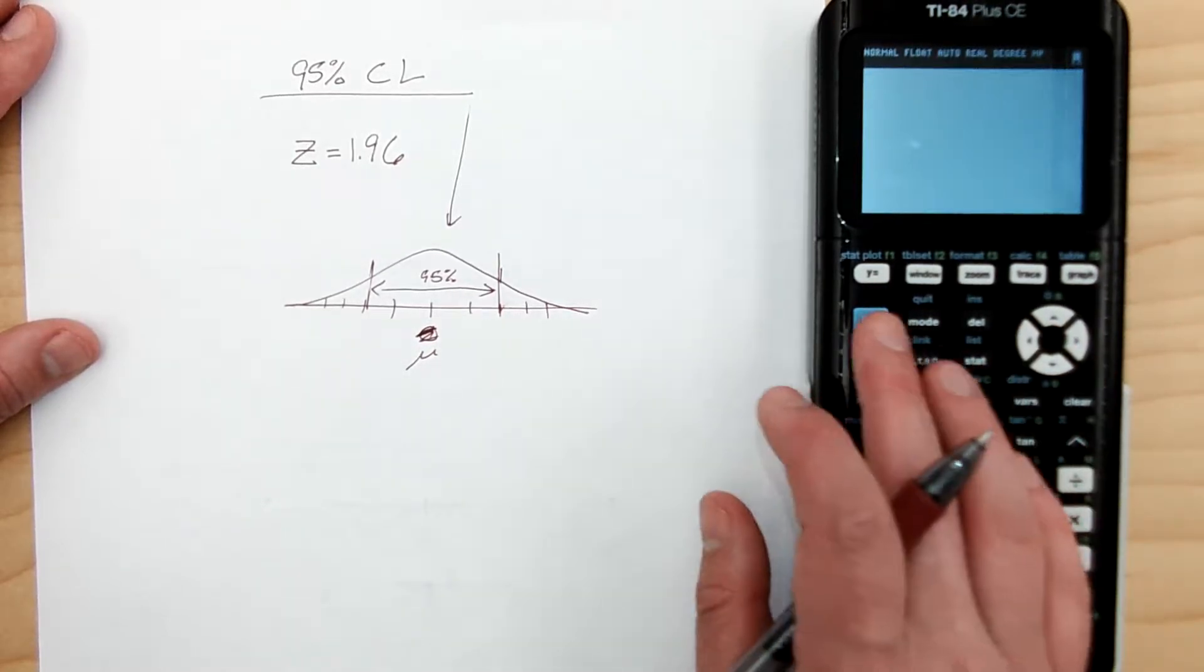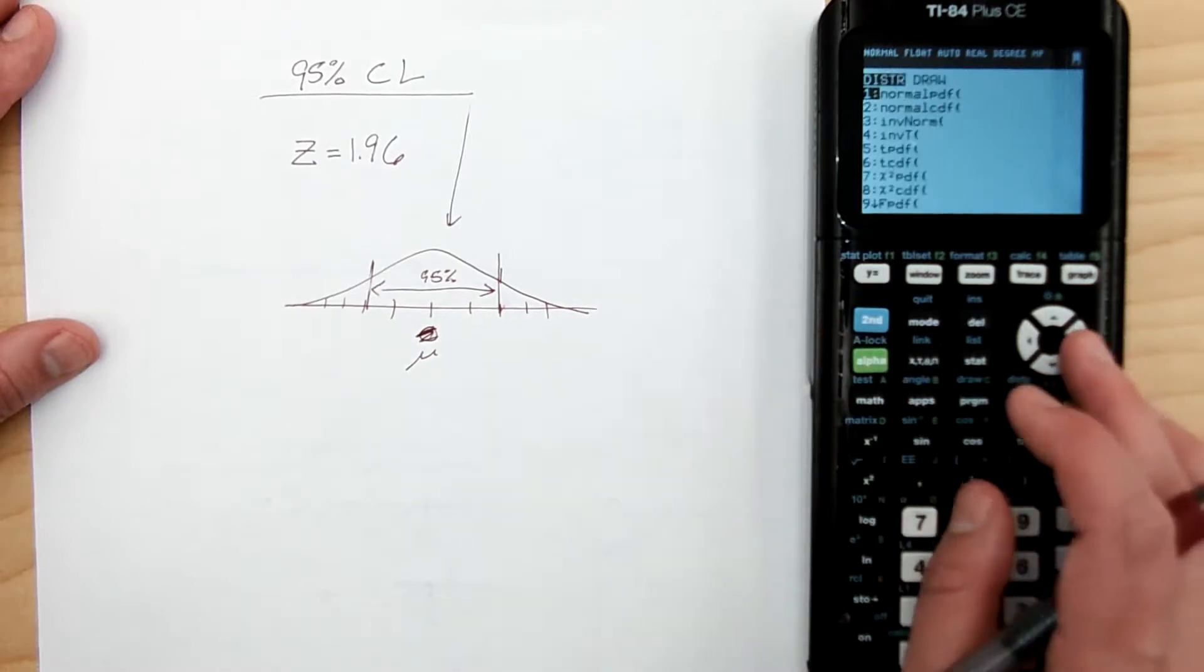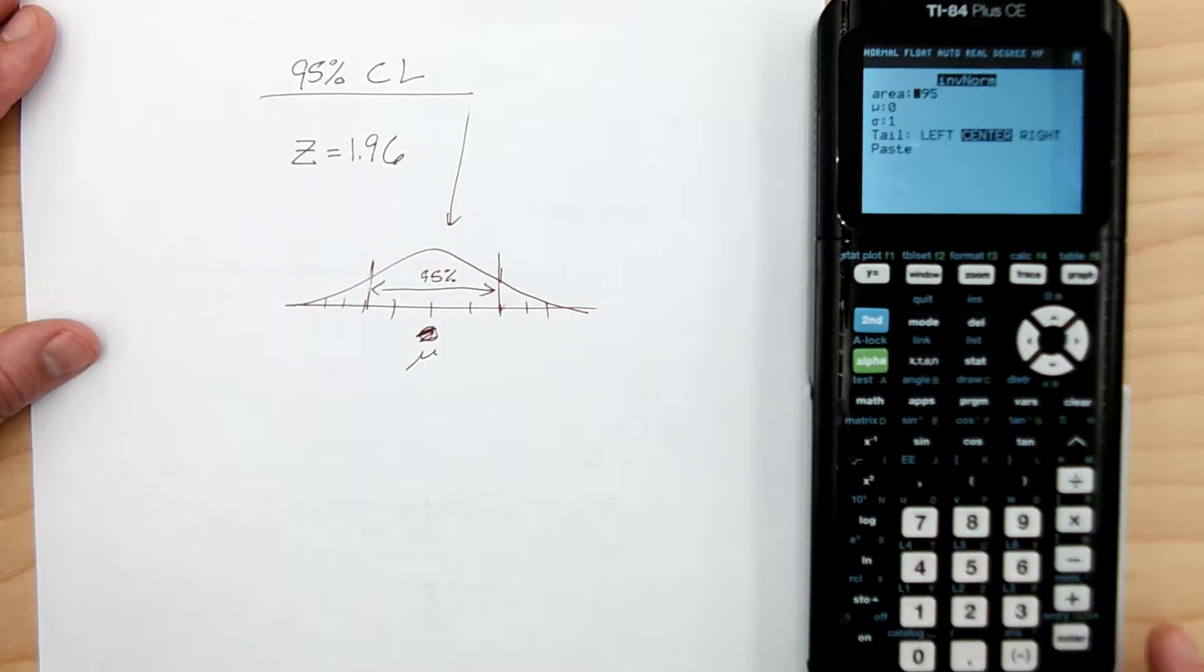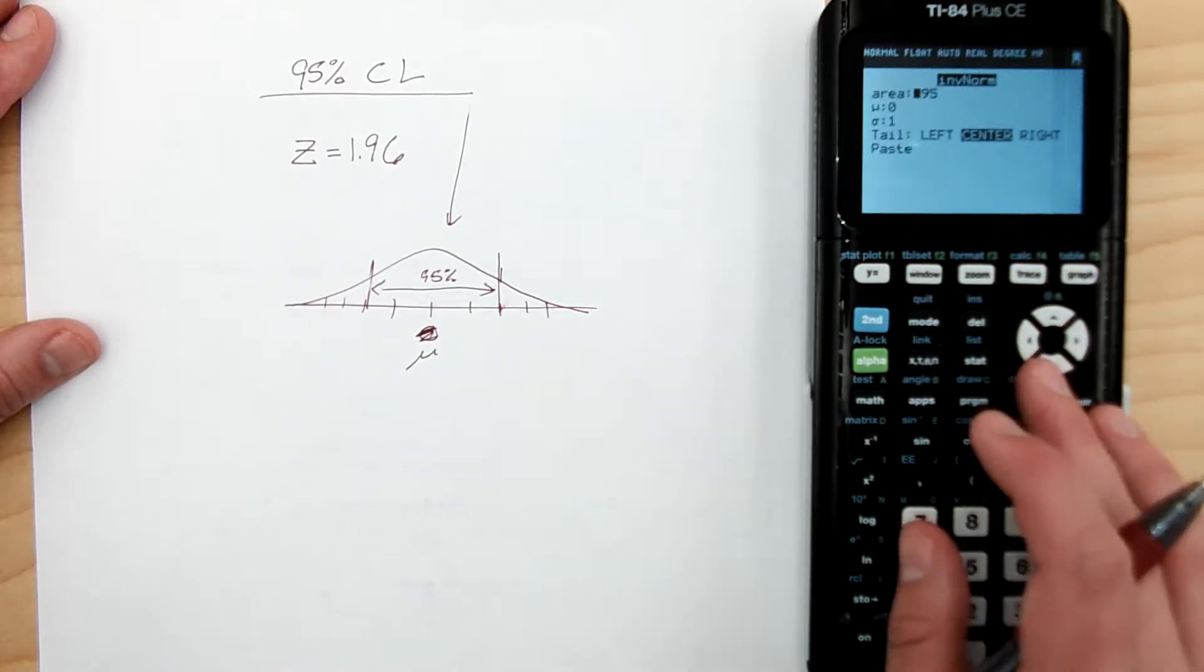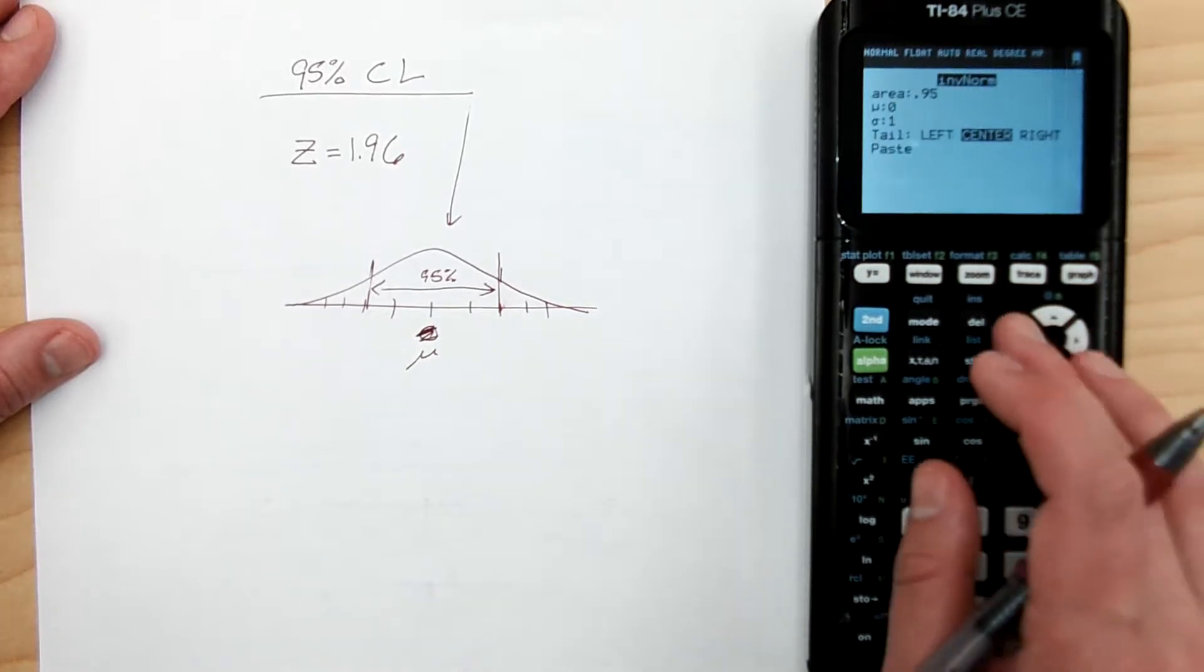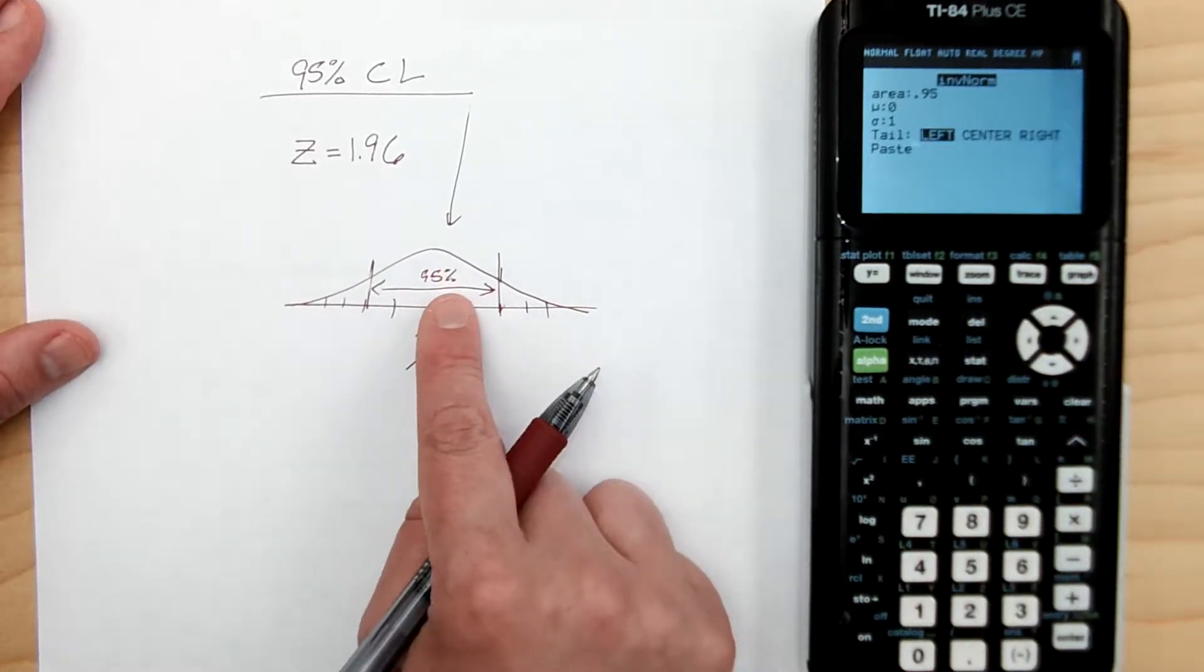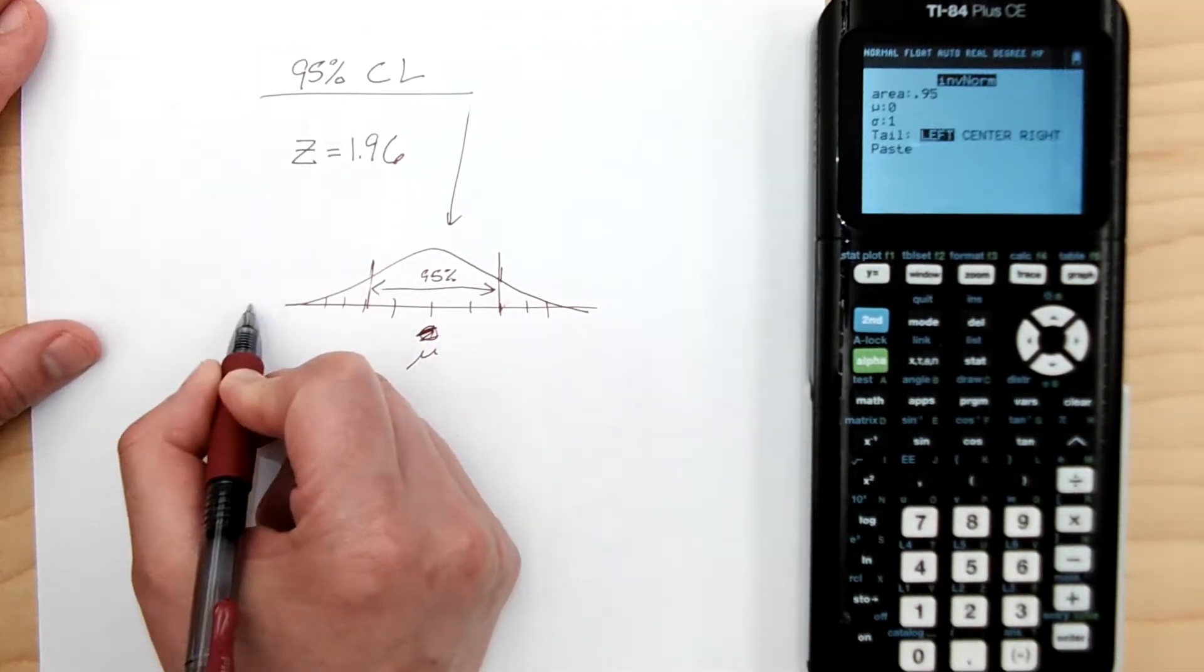Now, what if I didn't have that? I go second distribution, inverse normal. And if I don't have that, then what it's always going to do is a left tail. And so if it's always doing the area of a left tail,